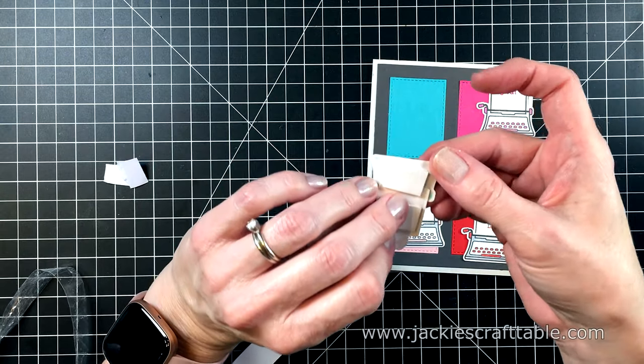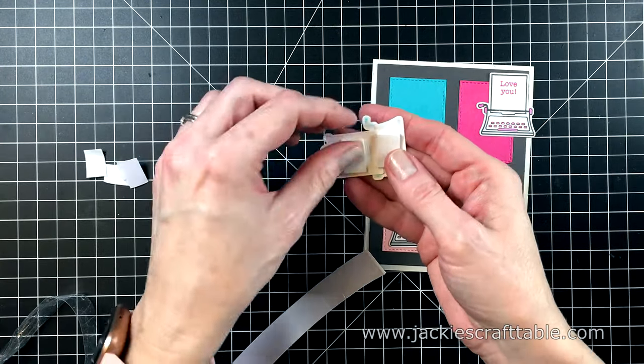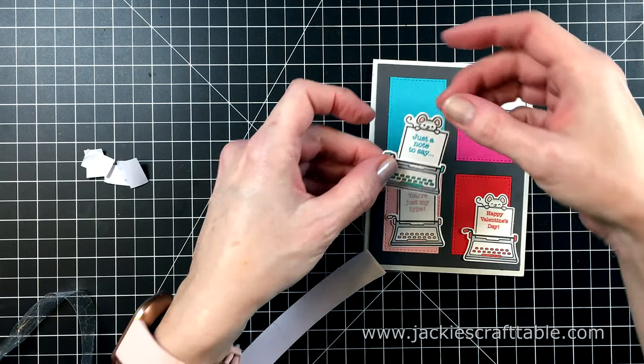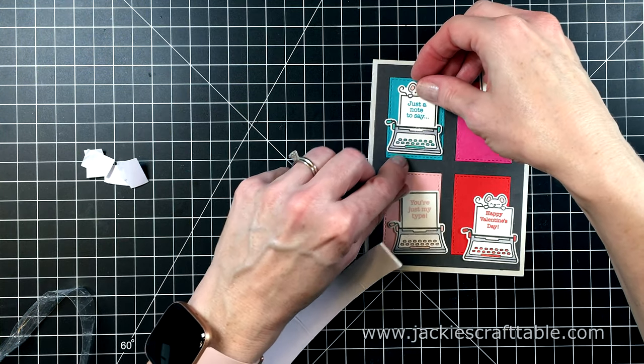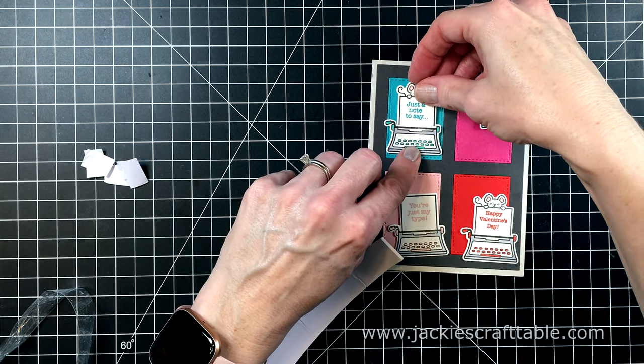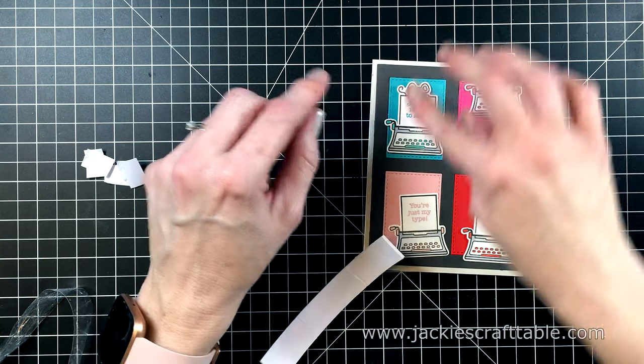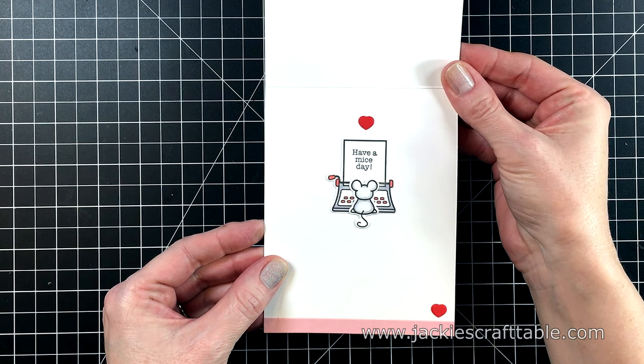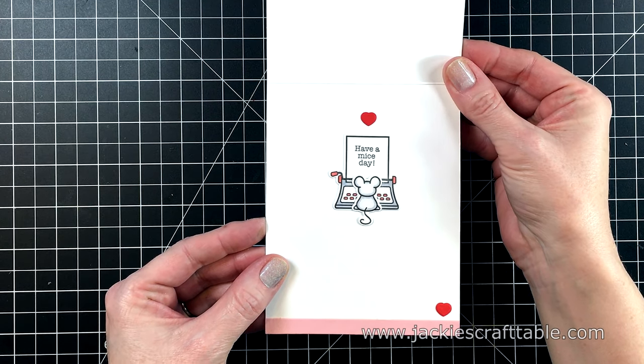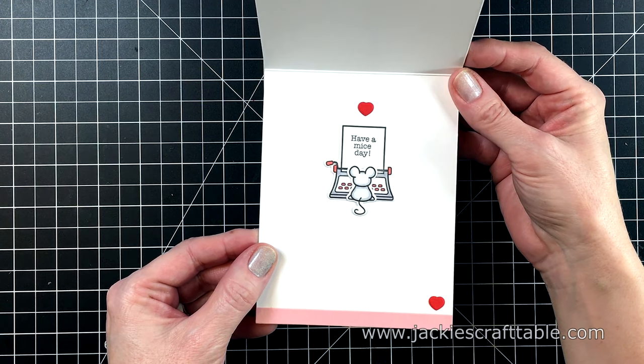And I'm going to use some foam squares to prop up my typewriters on this card—it just adds some cute dimension to this card. I also end up gluing down a few shiny silver sequins across this card—it added a fun touch of sparkle. And I also decorated the inside of the card with more cardstock and hearts, and the sentiment says have a mice day. These images are so stinking cute—I just love them.